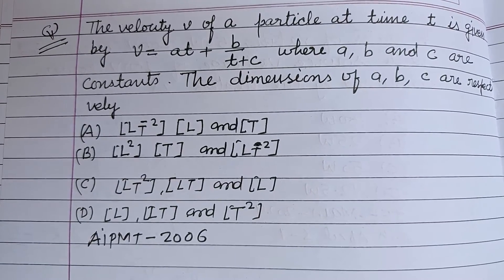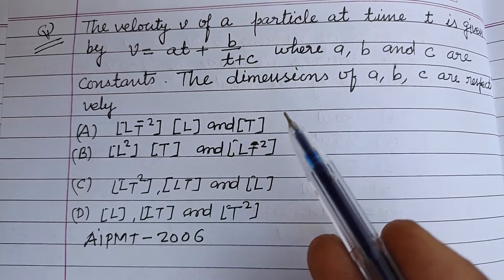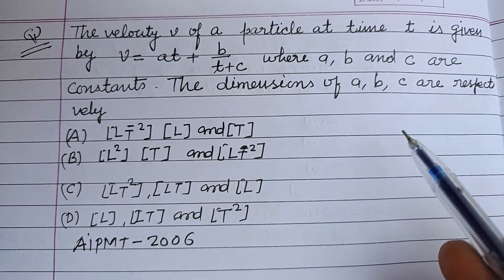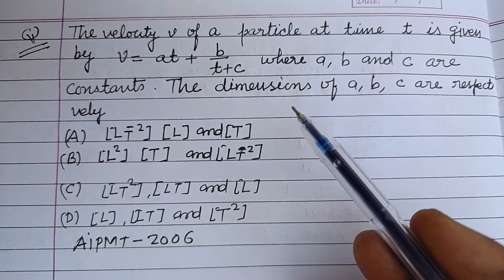Hello viewers, warm welcome to this YouTube channel. This is a question from All India PMT 2006. The velocity v of a particle at time t is given by v = at + b/(t+c), where a, b, and c are constants.